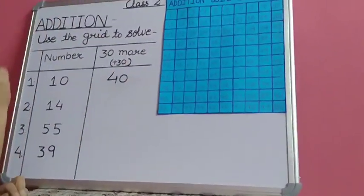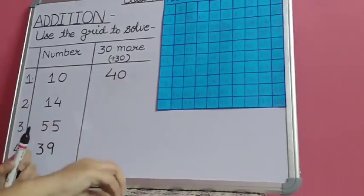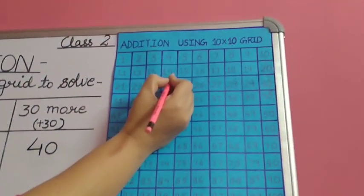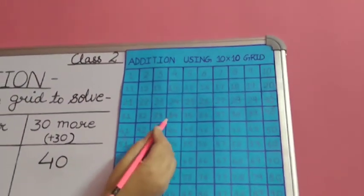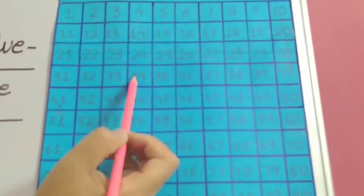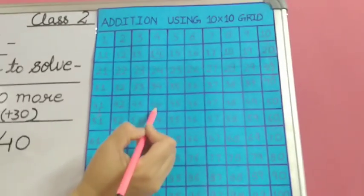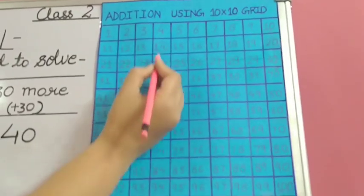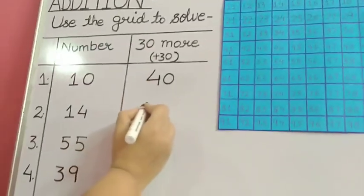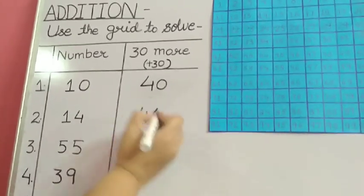The next number is 14. Find where 14 is on the grid. We have to add 30, so we will move 3 rows below — 1, 2 and 3. The answer is 44. We will write 44.